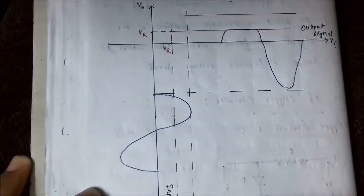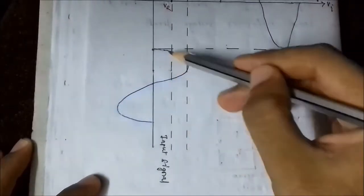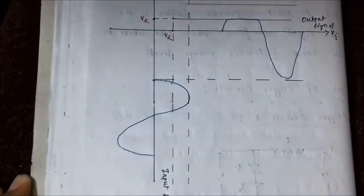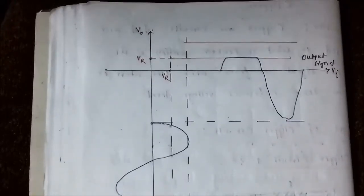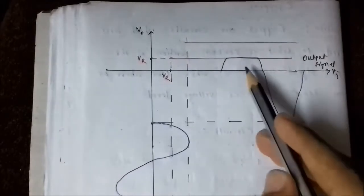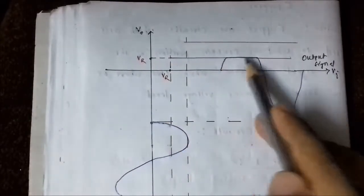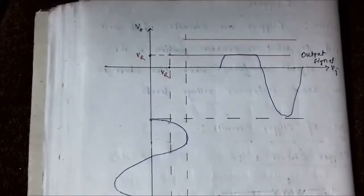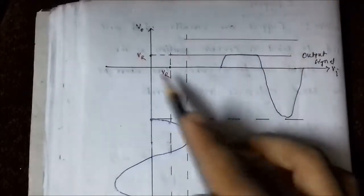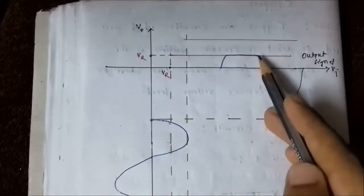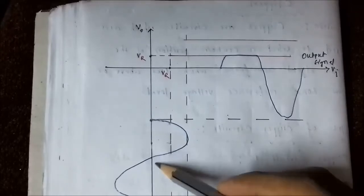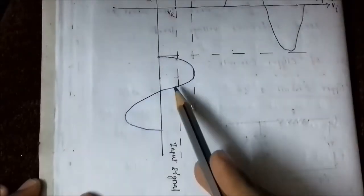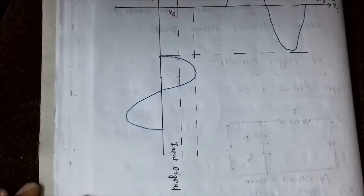When the input voltage exceeds the reference voltage value, the diode becomes forward biased and turns on, so the output voltage is equal to the reference voltage. The output voltage remains constant at the reference value for the entire duration that the input exceeds it. Again, when the input voltage drops below the reference voltage, the output follows the same pattern as the input.